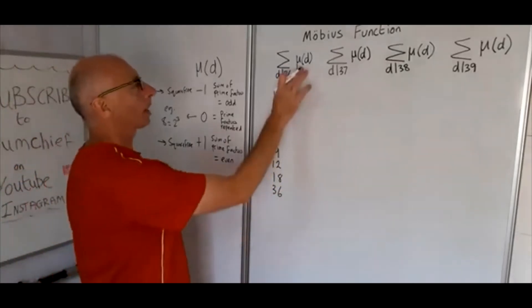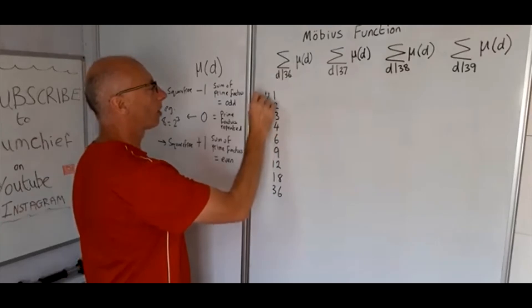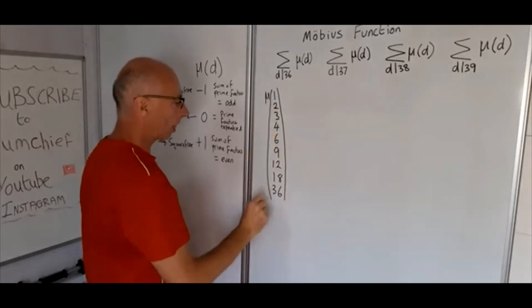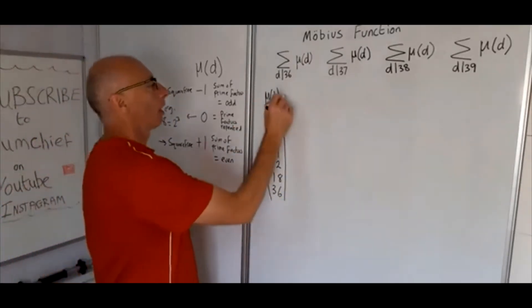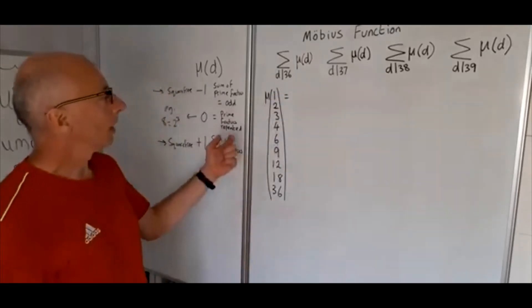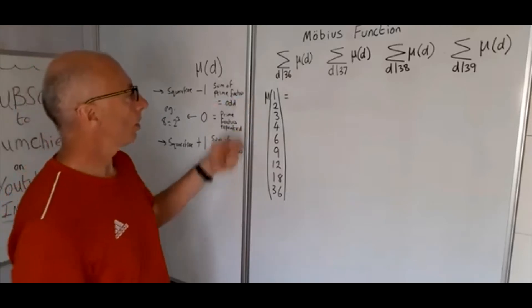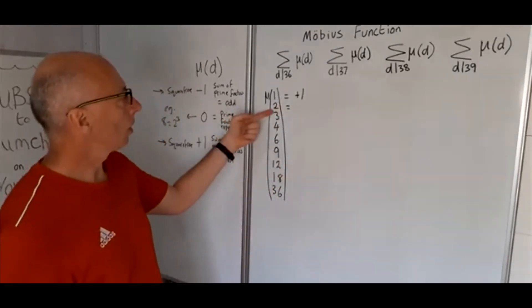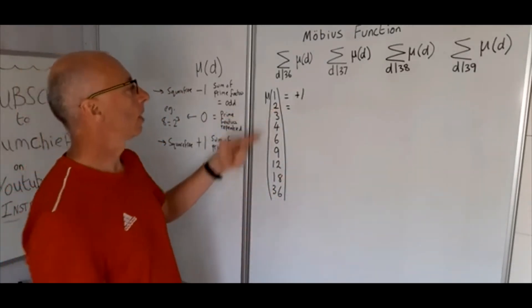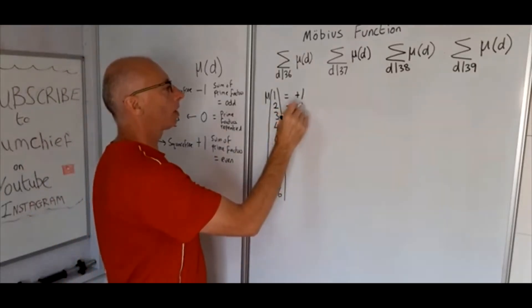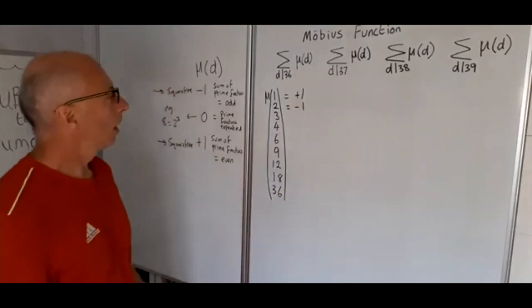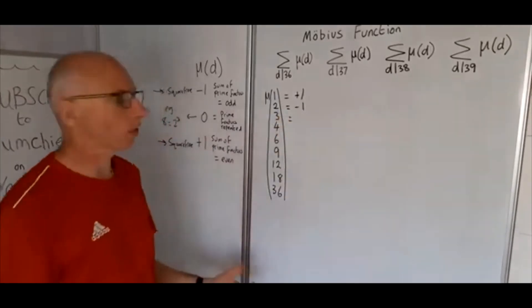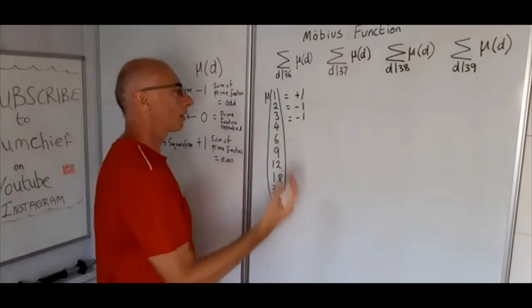Okay, so now we need to take the MU, that's the Greek letter MU, of each one of these. So MU of 1, prime factors of that is just got itself, so it's just 1, so therefore that takes the value positive 1. Likewise MU of 2, the only prime factor of that is 2 itself, so again this one here just takes the value of minus 1. Okay, 3, prime factors of 3, again 3, prime factors of that is just 3, so therefore you put minus 1 as it's only 1, it's an odd number.